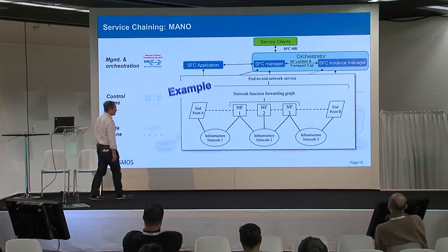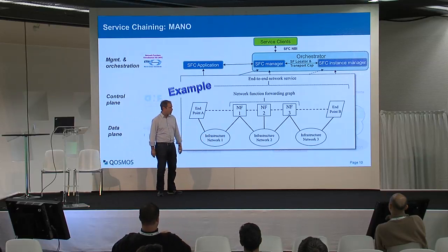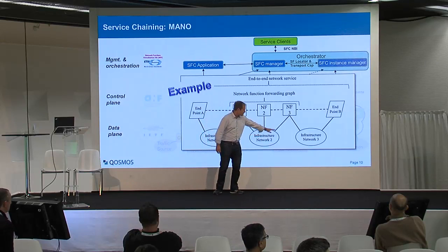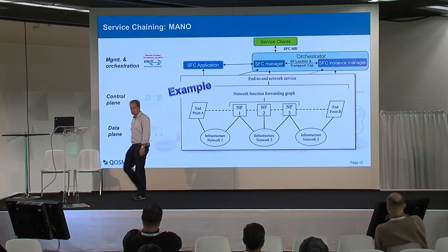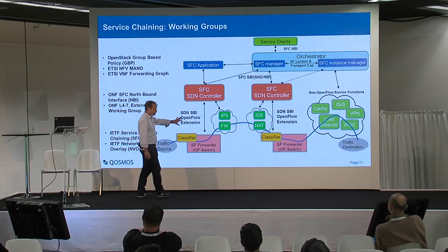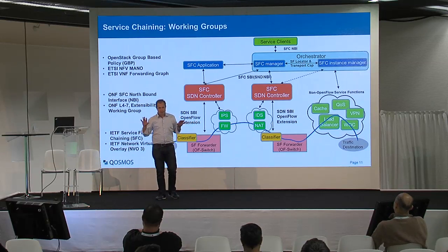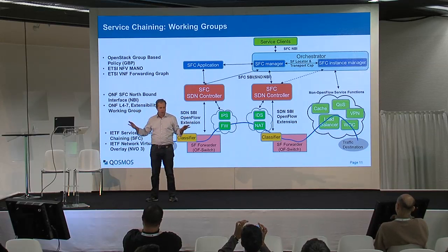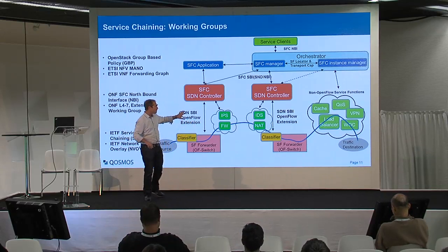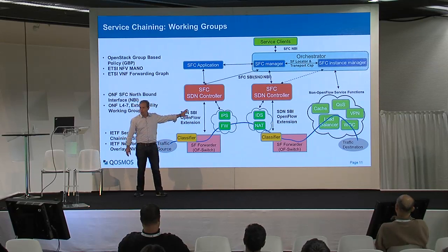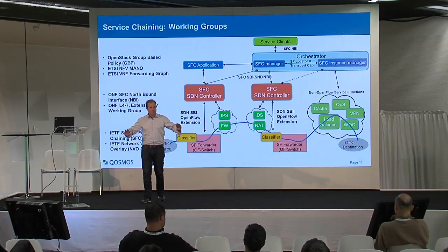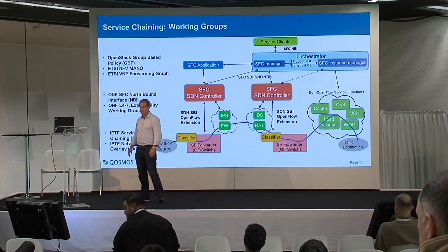In a typical example extracted from the NFV draft, you have endpoints, virtual network functions, and the physical or virtual infrastructure underneath. What we see is that three different standards organizations started from three different angles, and all of that is currently converging into a unified infrastructure to enable application-aware service chaining.